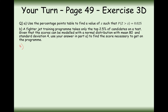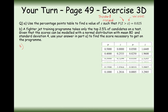For the first question, use the percentage points table to find a value for z such that the probability of Z being greater than little z equals 0.025. When you've got a capital Z in probability, that's your distribution — this signals that it is the standard normal distribution because it is a capital letter — and the little z is the point along the x-axis. So we're looking at the percentage points table for the value that gives us 0.025 upwards, and the z value there is 1.9600.